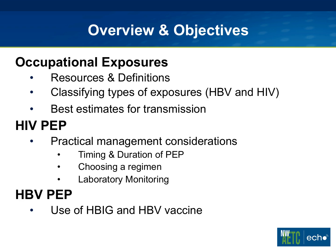Here's the outline of what I'd like to talk about today. I want to talk about exposures in general, covering HBV and HIV, how to classify the exposure, how to define it whether it's even an exposure or not, and give the best estimates for transmission in occupational situations. I'll then talk mostly about HIV post-exposure prophylaxis, which we call PEP, and go through practical management considerations, the timing and duration of PEP, how to choose a regimen, and what to do in terms of laboratory monitoring. And then at the end, I'll talk about hepatitis B PEP.